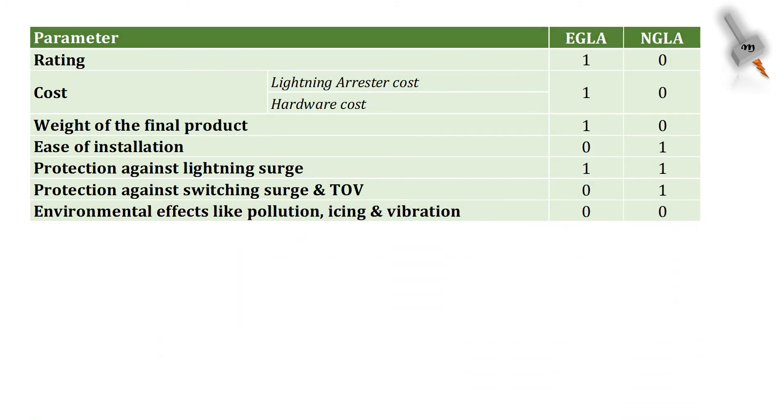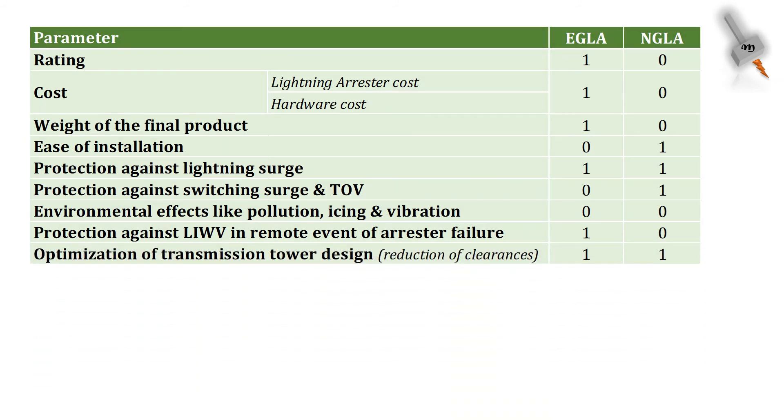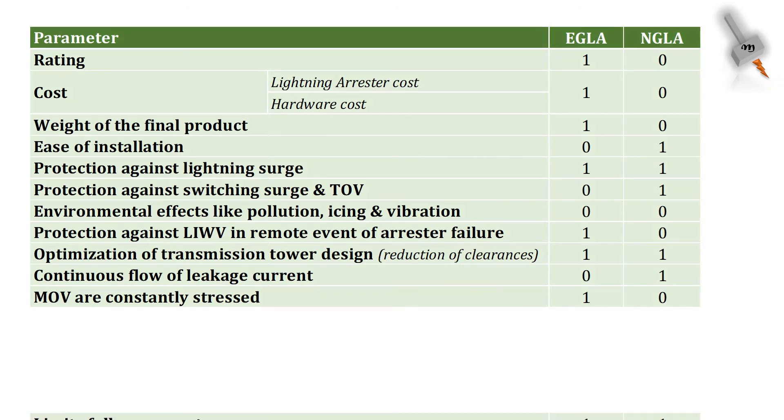Environmental factors like pollution, icing and vibration has the same level of detrimental impact on EGLA as well as NGLA. In case of end-of-life event, the insulation withstand protection of EGLA has better performance over NGLA. For optimization of transmission tower design and reduction of clearances, both EGLA and NGLA have the advantage. Leakage current is surely a disadvantage for NGLA and here EGLA has the advantage. Since NGLA is electrically constantly connected in the circuit, its zinc oxide blocks are constantly stressed. Limiting follow-on current is achieved perfectly by both EGLA and NGLA. Finally, it is easy to locate a failed NGLA as against to EGLA.